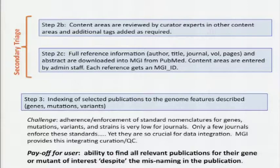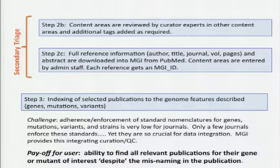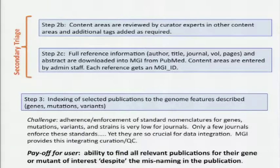There's also what we call secondary triage, where the content areas are reviewed by additional curators. The first task is the quick look, and then there's a second round where other curators look only at the chosen papers and say, 'you missed that, there's gene expression in this paper,' and tag it additionally. At that point, the full reference gets downloaded from PubMed — journal, author, title, and abstract — and then our admin staff puts tags on those records as to what areas that paper is relevant for.